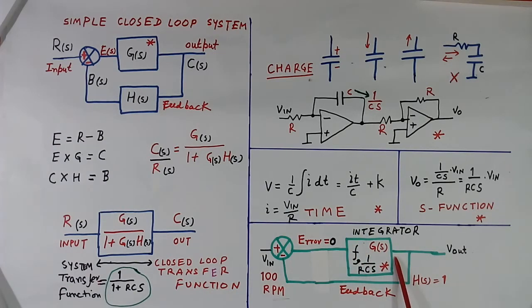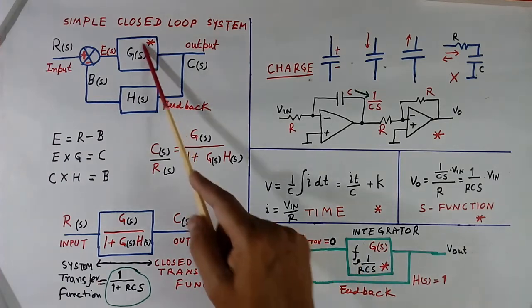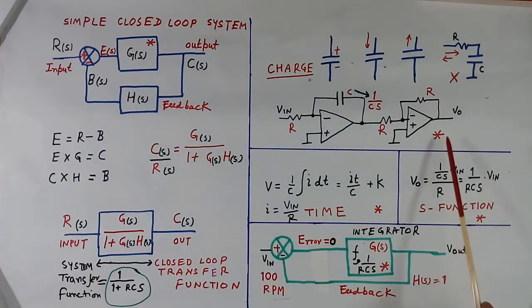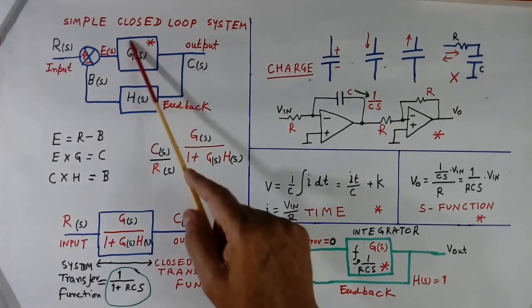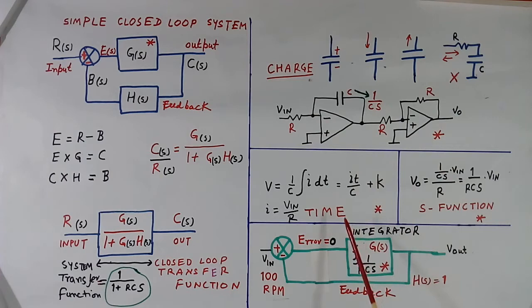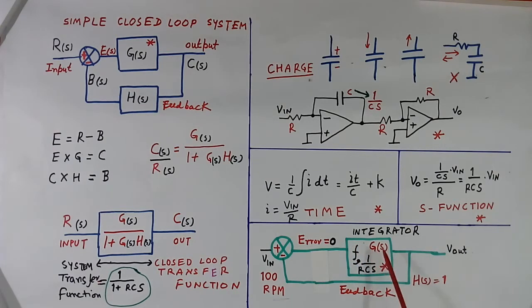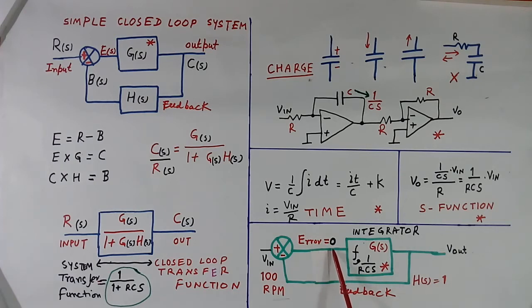And this is the transfer function. You see I have written star: 1, 2, 3, 4, 5 — these are all the same. This is nothing but this, nothing but this, nothing but this — so this block is written as this integration, the written form of G(S), or 1 by RCS, or in many other ways. This point is called the error. When the system is working, this value is always 0 — error is always 0.